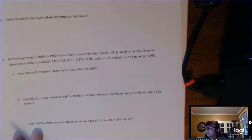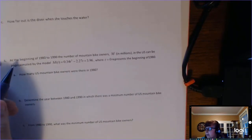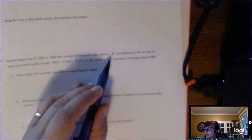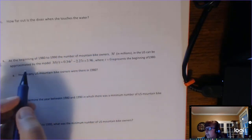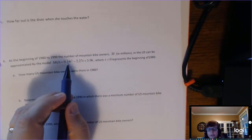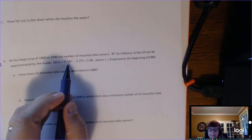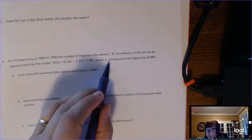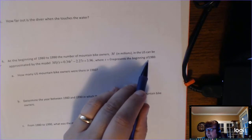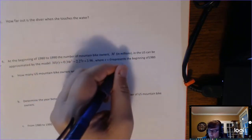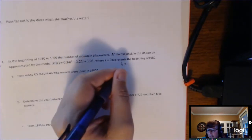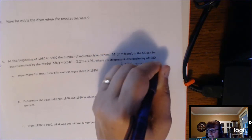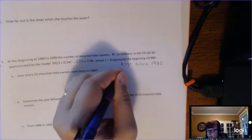Okay, and then number four, I wanted to look at, it says at the beginning of 1980 to 1990, the number of mountain bike owners, M, is in millions in the U.S. can be approximated by this model, and it's quadratic, but I want you to notice that it opens up this time, so we haven't done one like that. And then the other thing is that T equals zero represents the beginning of 1980. Okay, so if we write down our math English dictionary,